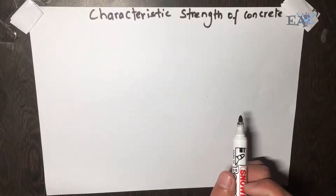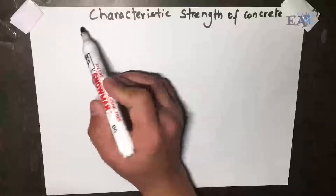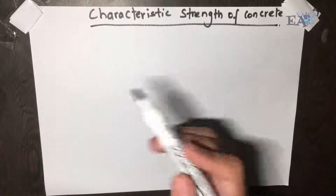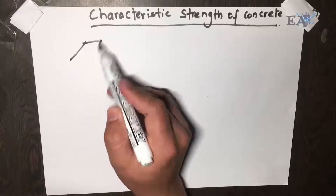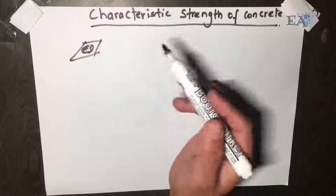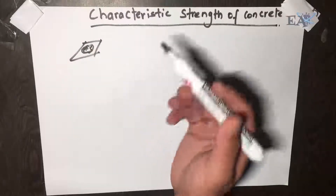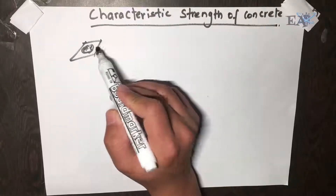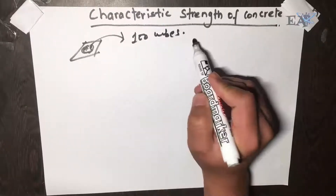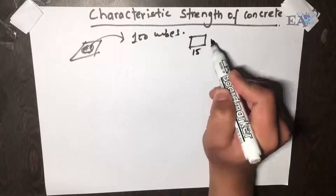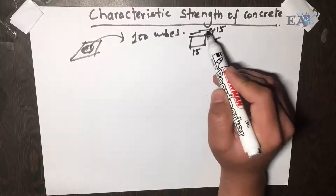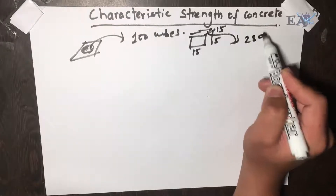Welcome to the Instant Knowledge Series. In this video we're talking about the characteristic strength of concrete. To understand this, let us assume that we made a batch of concrete using a certain mix of aggregate, cement, sand, and water. From this batch we made 100 cubes — the standard size is 15 by 15 by 15 cm — and we did curing for 28 days.